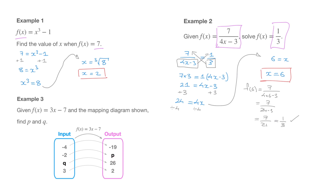Since p corresponds to the output value for x equals negative 2, all we have to do to find p is replace every x inside f of x by negative 2. So p equals f of negative 2, which equals 3 times negative 2 minus 7. That's negative 6 minus 7, and negative 6 minus 7 equals negative 13. So p is equal to negative 13.